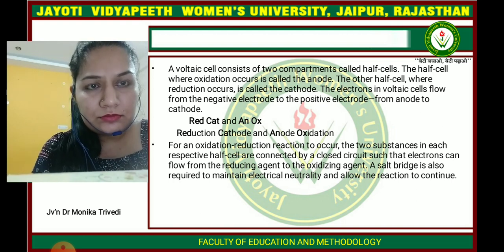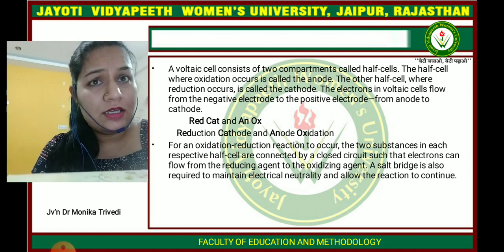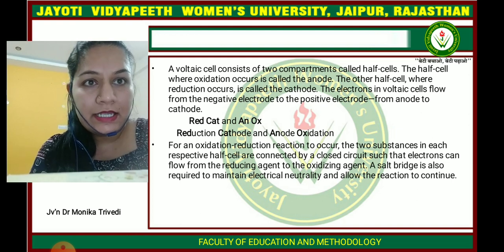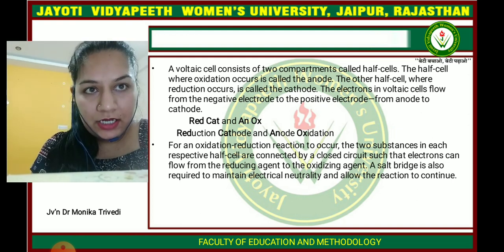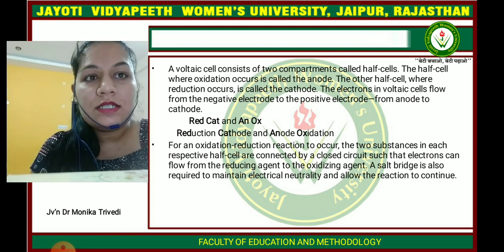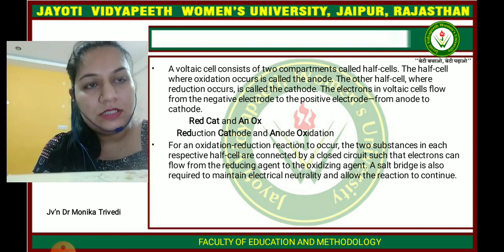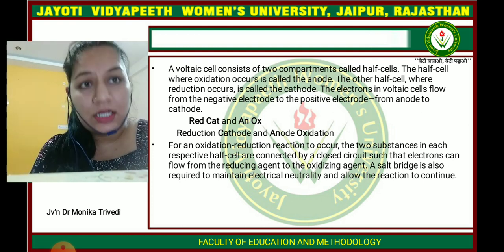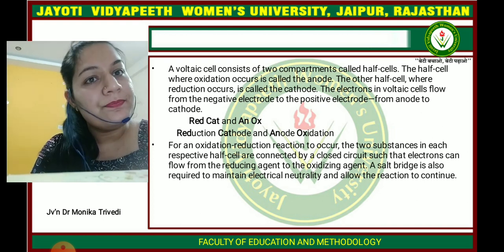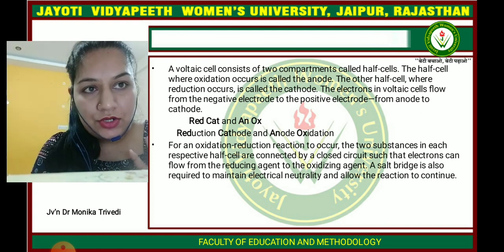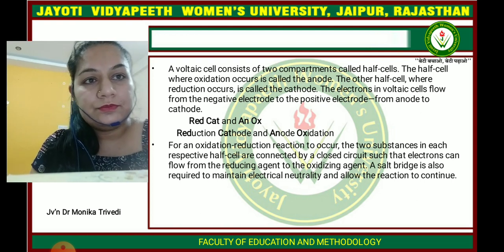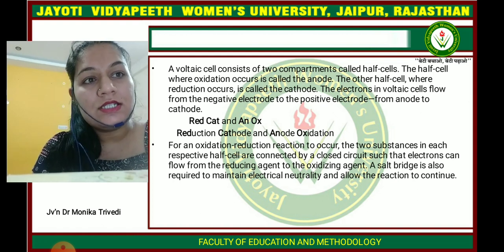You can remember what is a cathode and what is an anode using the mnemonic 'Red Cat and Ox': Red means reduction, Cat means cathode, An means anode, and Ox means oxidation. So reduction occurs at the cathode and oxidation occurs at the anode. For an oxidation-reduction reaction to occur, the two substances in each respective half-cell are connected by a closed circuit so that electrons can flow from the reducing agent to the oxidizing agent.